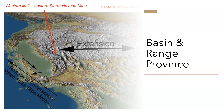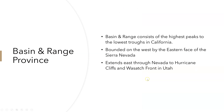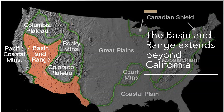Let's get into the Basin and Range extension. The Basin and Range consists of the highest peaks to the lowest troughs in California, all due to the extension that occurs below. It is bounded on the west by the eastern face of the Sierra Nevada and extends east through Nevada to Hurricane Cliffs and the Wasatch Front in Utah. Keep in mind that many of the features we'll talk about are not only present in California, but in other states as well.